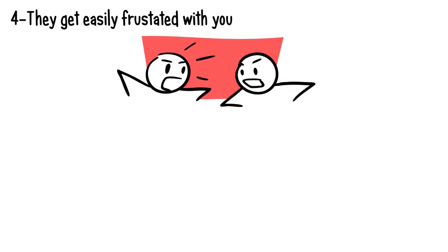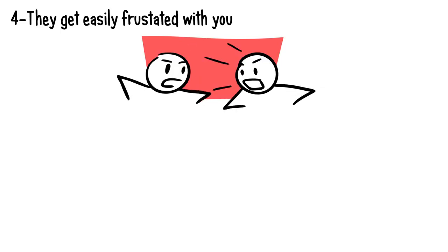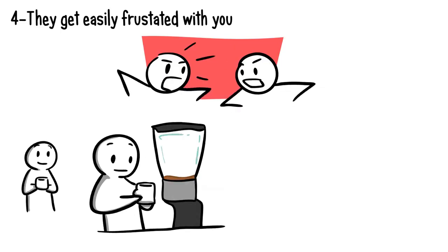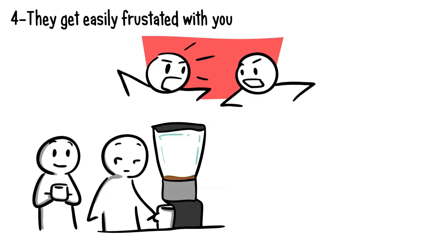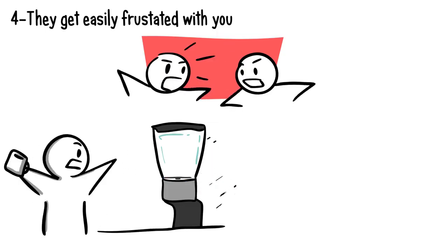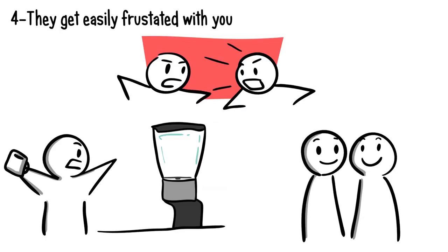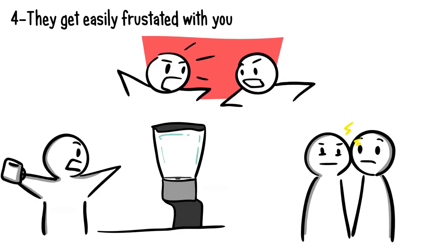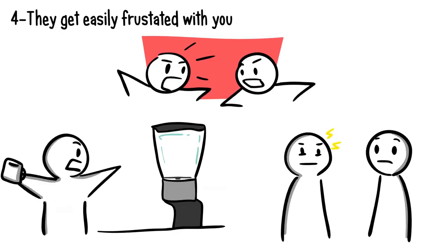Number four. They get easily frustrated with you. Do the two of you argue or disagree over matters on a daily basis? When someone dislikes you, they'll do anything except make things easy for you. They might have been in a good mood, but once they interact with you, they turn sour, bitter, and angry.